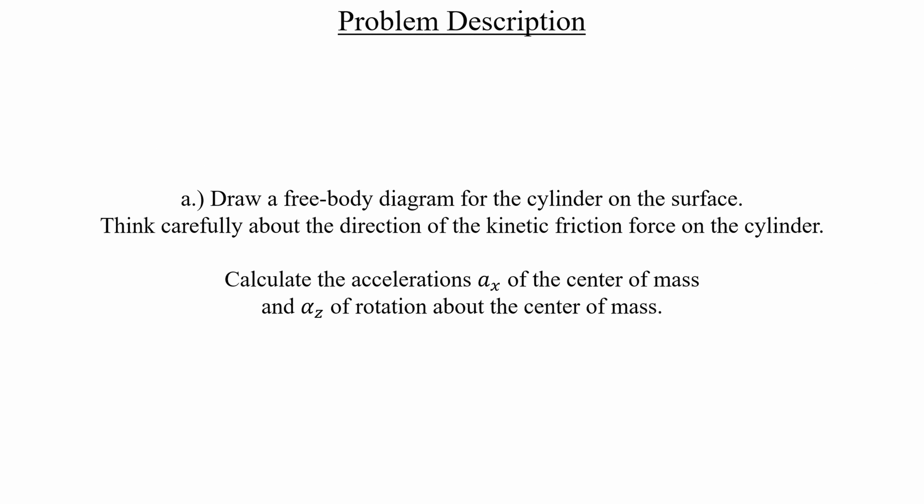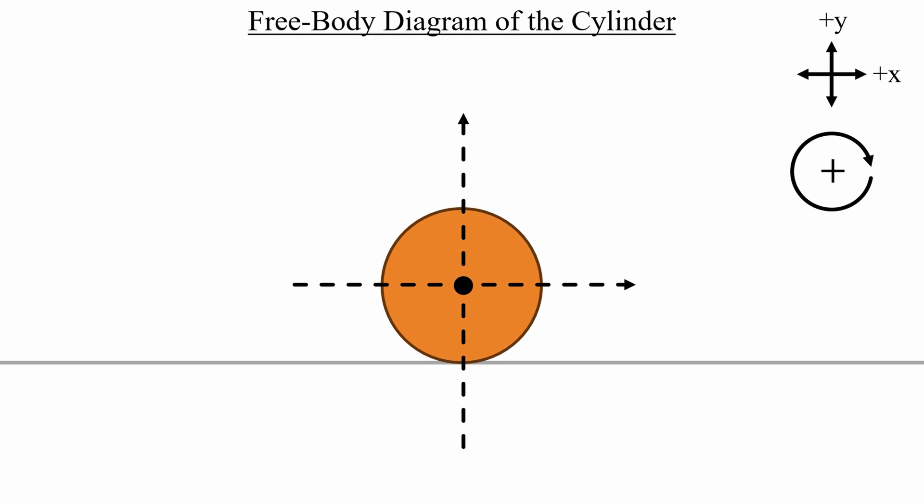We need to draw a free body diagram of this cylinder, and use that to get the linear and angular accelerations relative to the center of mass. Let's start our diagram by setting up a coordinate system that's centered on the middle of the cylinder. The forces acting on that cylinder during rolling with slipping will be its weight, the normal force, and kinetic friction.